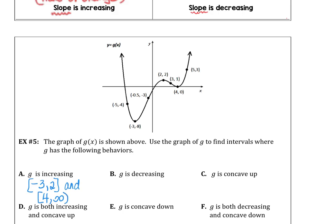Remember, we don't bracket infinity. Where is G decreasing? That would be from negative infinity to negative three, and again from two to four. These are X values.